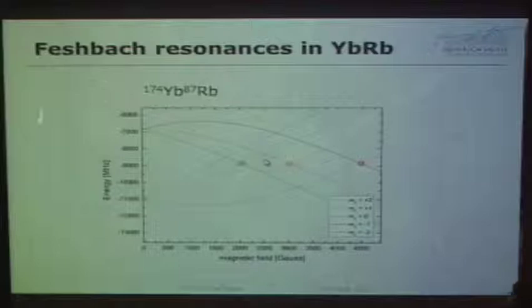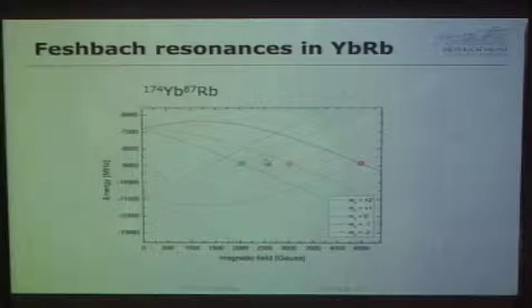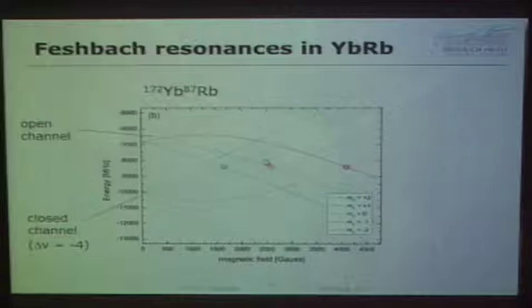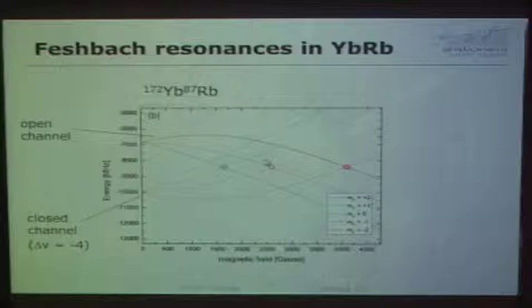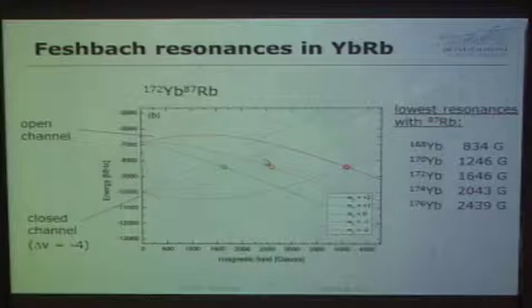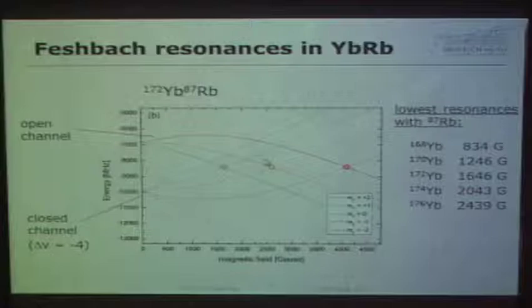For ytterbium-174 with rubidium-87, the first Feshbach resonance is at around 2000 Gauss; for ytterbium-172, around 1600 Gauss. For bosonic ytterbium, only delta MF=0 resonances are allowed, and the lowest bosonic resonance is for ytterbium-168 — not the most abundant isotope. These high fields make the bosonic case less attractive compared to systems like potassium-sodium where resonances occur in the Gauss range.